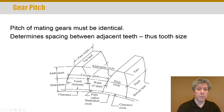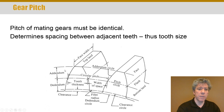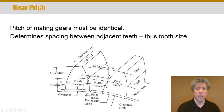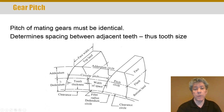You can see the clearance circle and clearance dimension, given the symbol C. You can see the addendum, given symbol A. You would think the dedendum would have symbol D, but it's B. And you can see how the dedendum is always larger than the addendum.